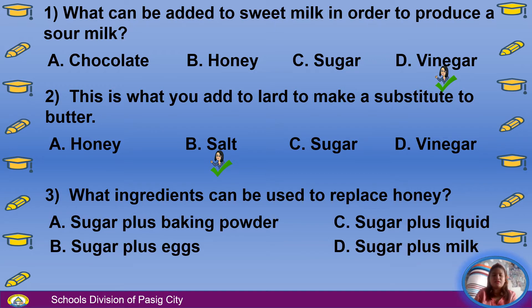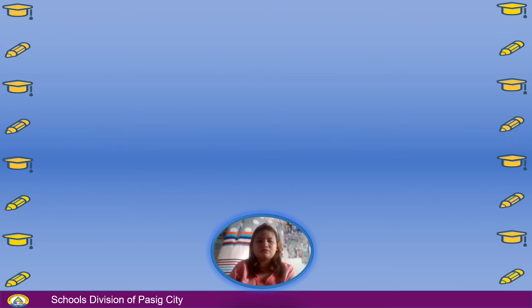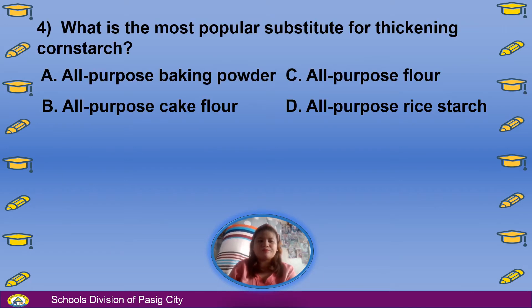Number 3: What ingredients can be used to replace honey? A. Sugar plus baking powder, B. Sugar plus eggs, C. Sugar plus liquid, D. Sugar plus milk. The answer is C, Sugar plus liquid.